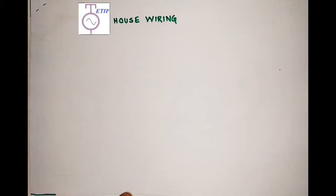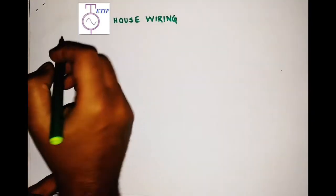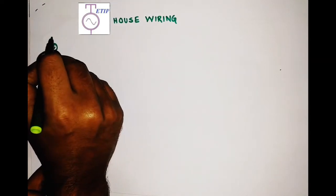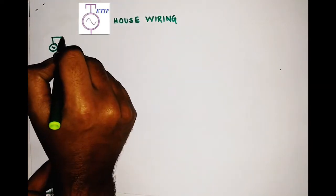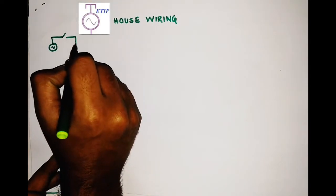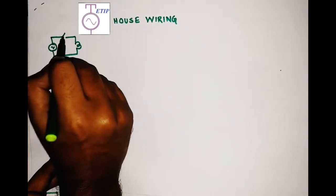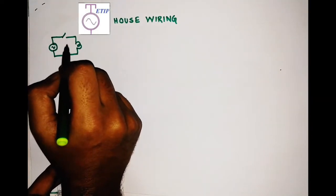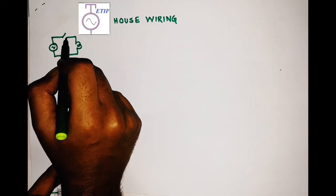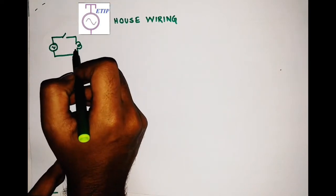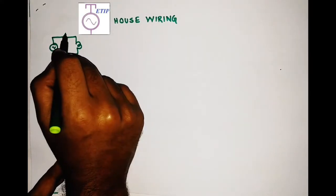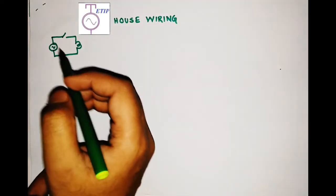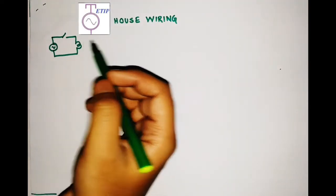The basic principle of any electrical circuit is: suppose this is an AC supply — a single-phase AC supply — this is the on/off switch, and this is your load. Whenever you close this switch, the load will take the current and operate. Whenever you open the switch, the load will be switched off. For example, if this is a lamp, close the switch and the lamp is on; open the switch and the lamp is off. This is the basic principle of any circuit.